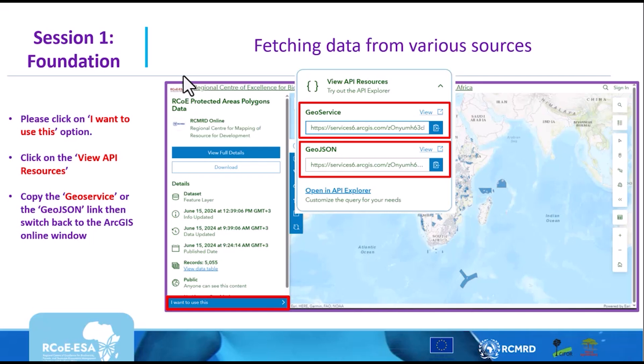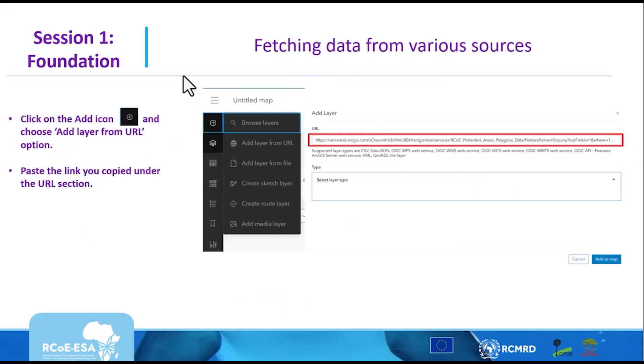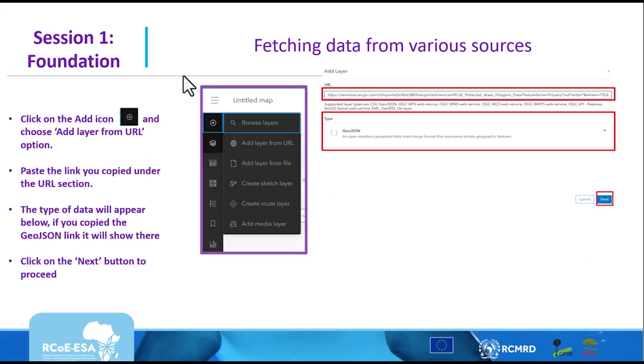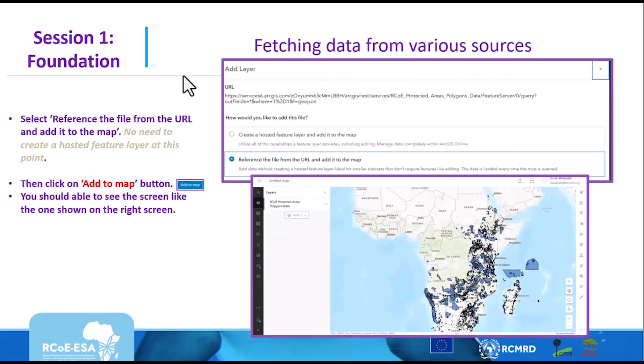Copy either of the links and switch back to your ArcGIS online account. Click on Add Layer from URL, and paste your URL in the URL section provided. Then click on Add Map. It will ask whether you want to create a hosted feature layer or use the file as a reference from the URL. We don't need to create a hosted feature layer, so choose the second option — reference the file from the URL — and click Add to Map. Your layer should then be added to the map.